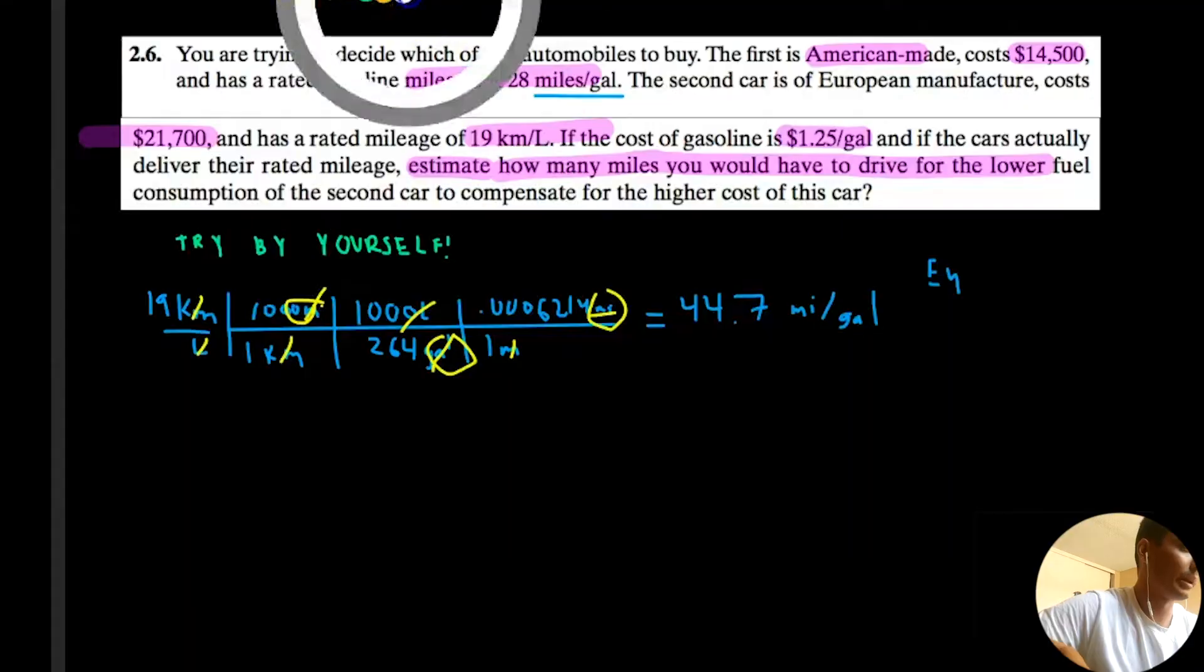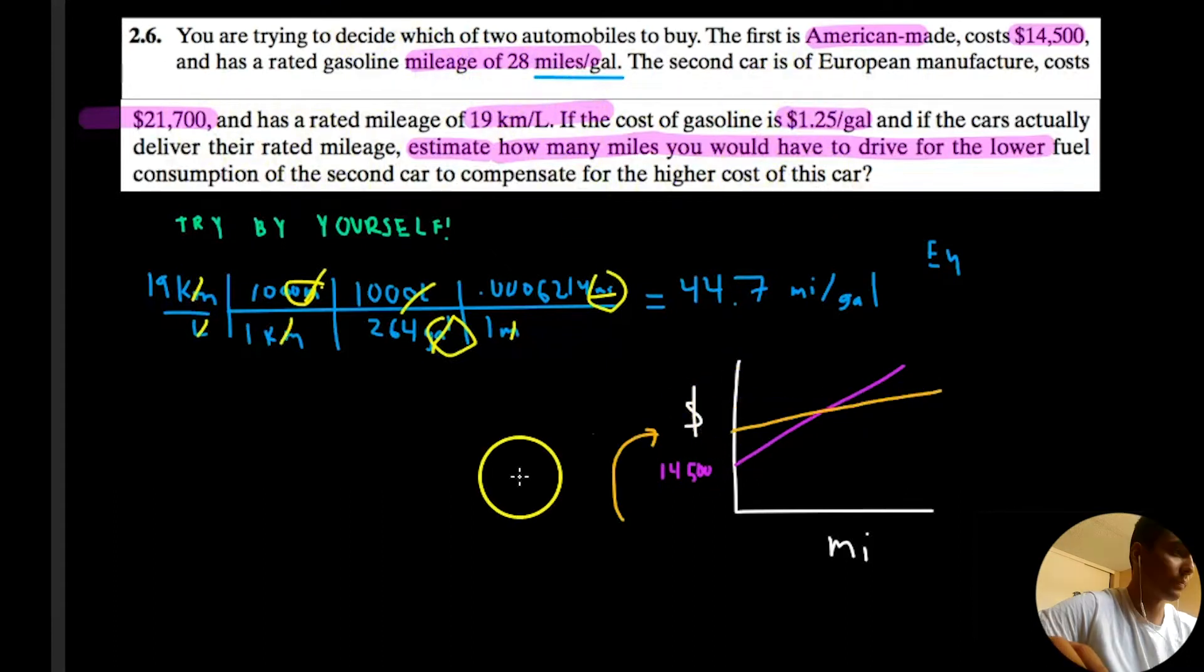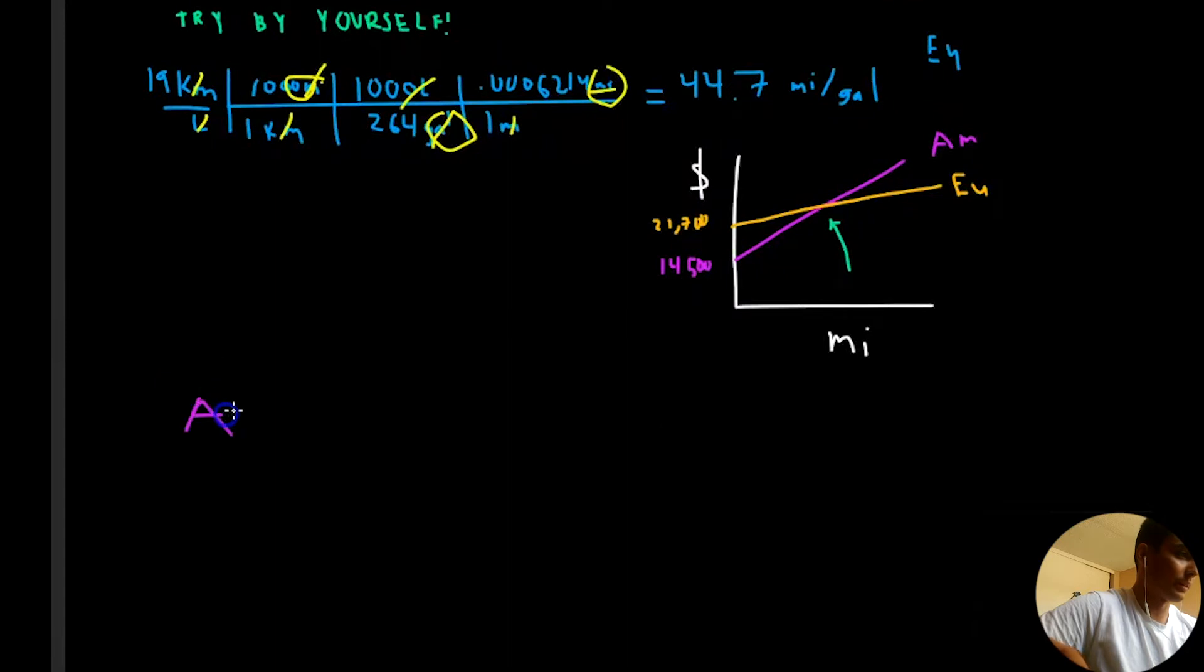Now that we have this conversion, we need a game plan. They want us to identify how many miles it would take for one car to be more expensive than the other. Let's use some algebra. I'm going to make a function of price as a function of miles. We know that initially the American car is $14,500. European car is going to be initially more, $21,700.